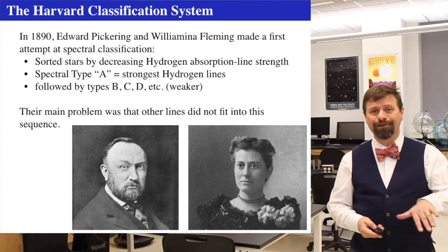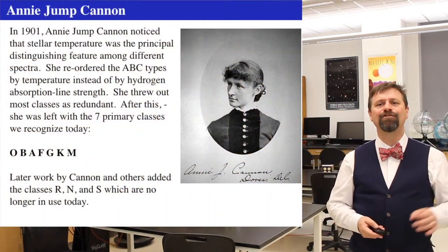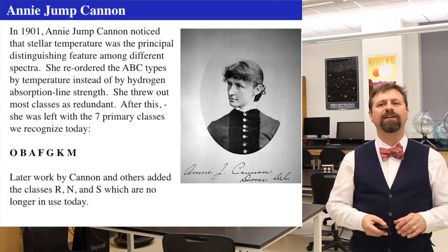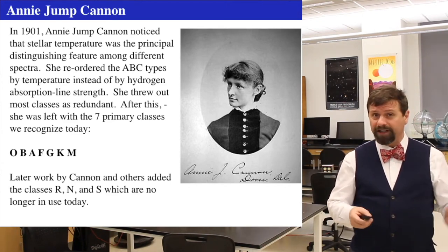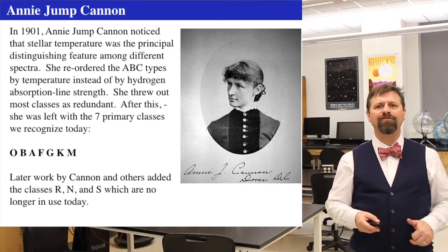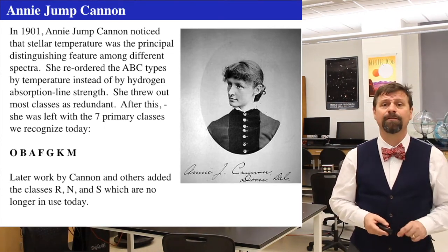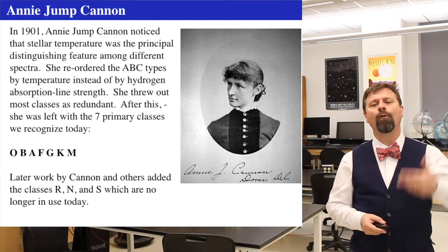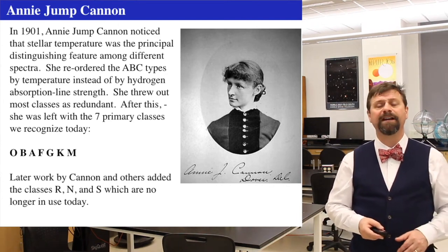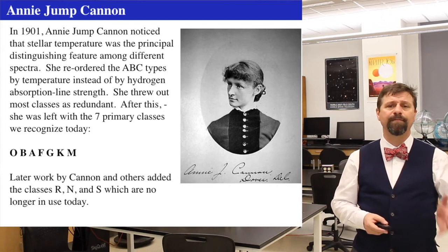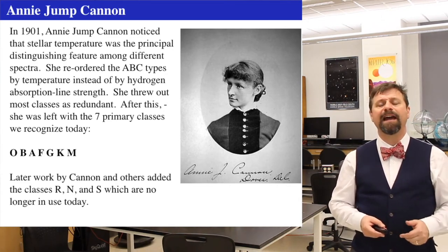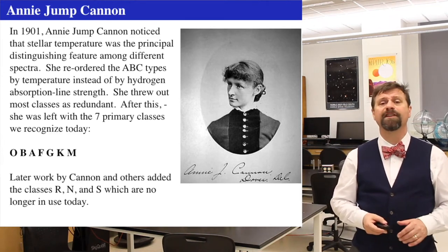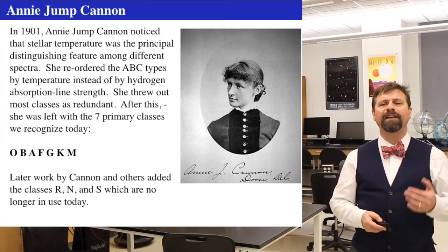Approximately 11 years later, in 1901, Annie Jump Cannon noticed that stellar temperatures were the principal distinguishing characteristic among the spectra. She took the existing arrangement and rearranged it — removing most classes as redundant and reorganizing them according to decreasing temperature. She found O stars to be the hottest, then B, A, F, G, K, and M — the seven primary stellar spectral classes we recognize today.